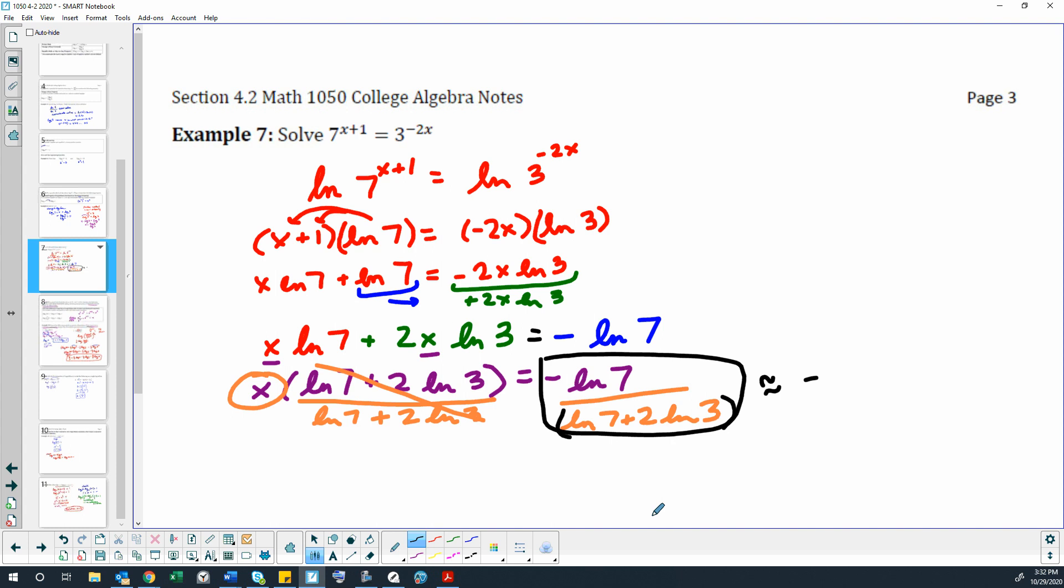Into the calculator to get an appropriate answer. So I just typed in my negative natural log 7, and I got negative 1.9459101149. And then I'm going to divide that by natural log 7, which would be that 1.9459, like the same number sort of.